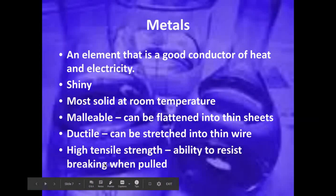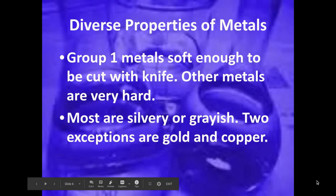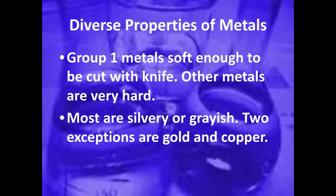High tensile strength is very similar — when we pull a metal, it's not going to break. When we look at metals, they have lots of different properties. For example, in group one, the first row of metals, those are going to be very soft metals. When we typically think of metals, we think of something hard and strong, but group one metals are very soft — so soft that you can even cut them with a butter knife.